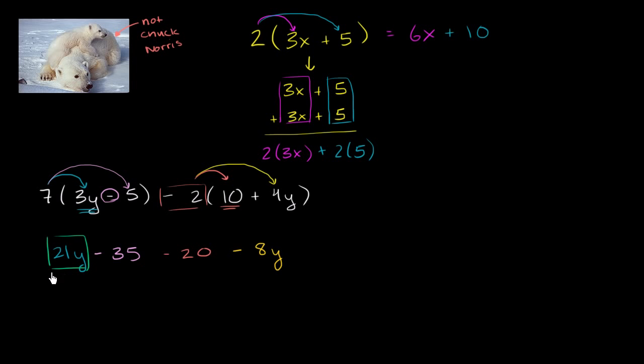You have 21y's right over here, and then from that we are subtracting 8y's. So 21 of something, if I have 21 of something and I take 8 of them away, I'm left with 13 of that something.